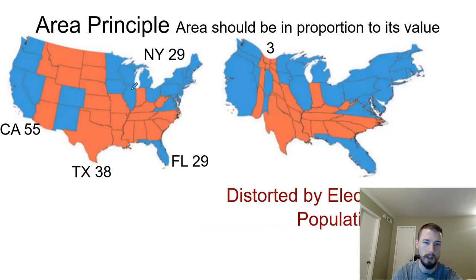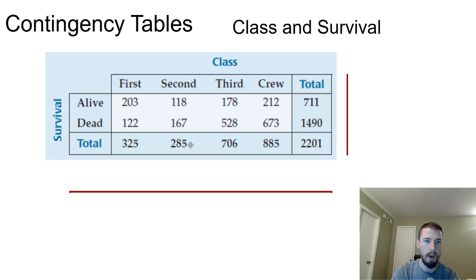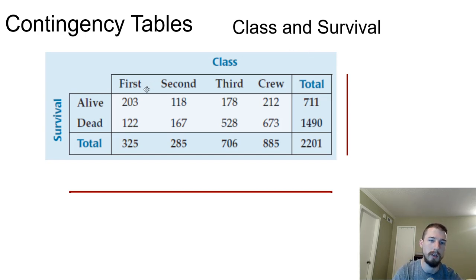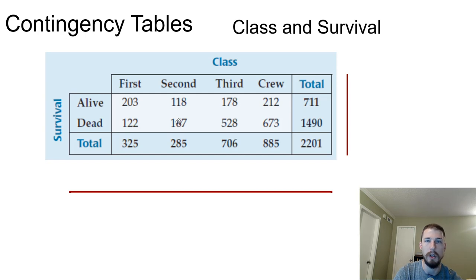Next we have contingency tables. Instead of breaking down one variable like class, we break down across two variables — for example, class and survival. We have four class rows (first, second, third, crew) and two survival columns (yes or no), giving us eight cells altogether. The totals on the outside — the marginal distributions — show overall survival counts and overall class counts. So 711 survived, 1,490 died, out of 2,201 total people on the Titanic.